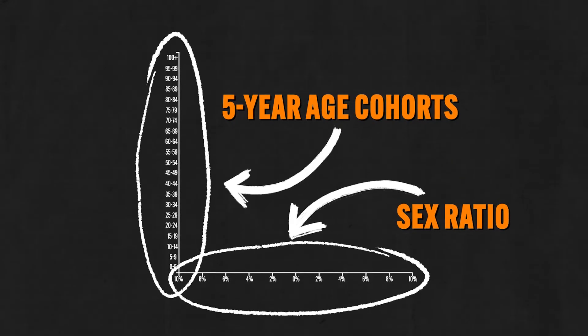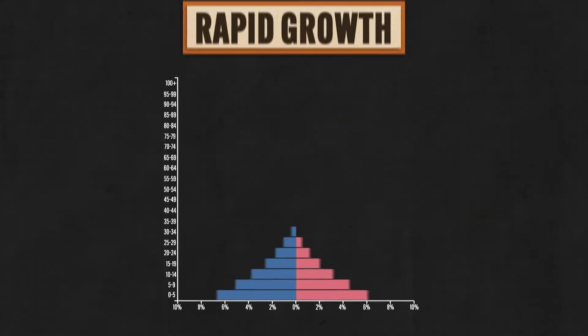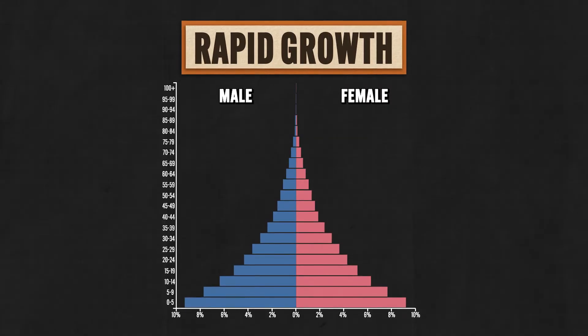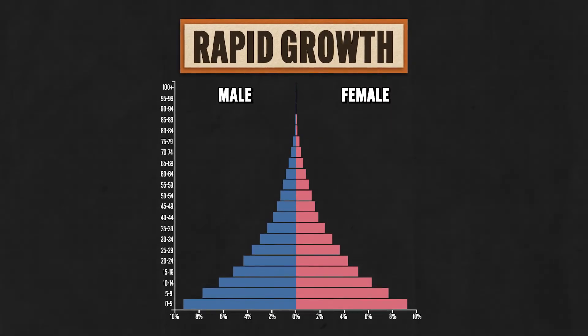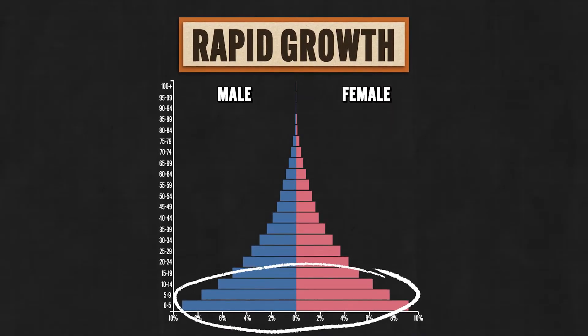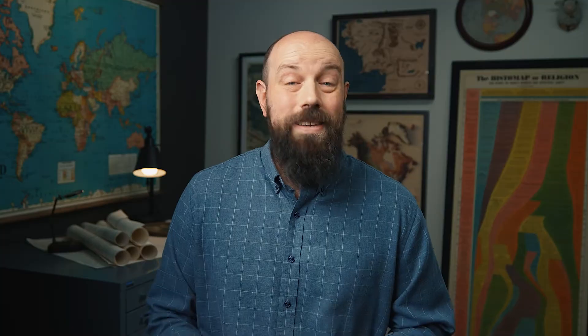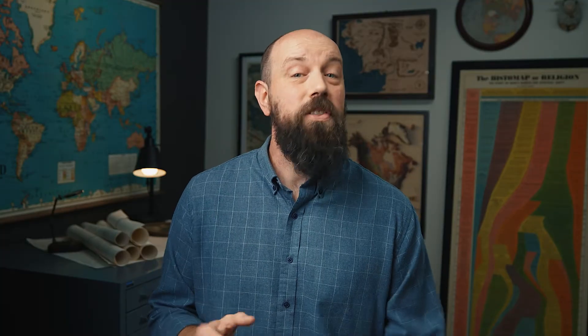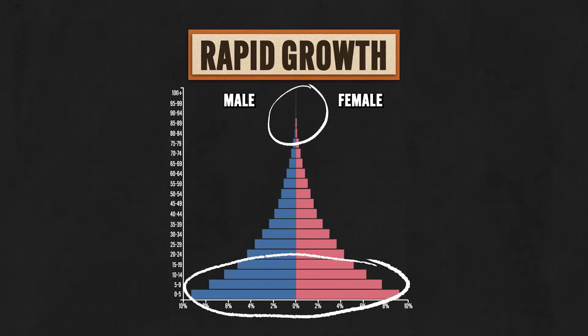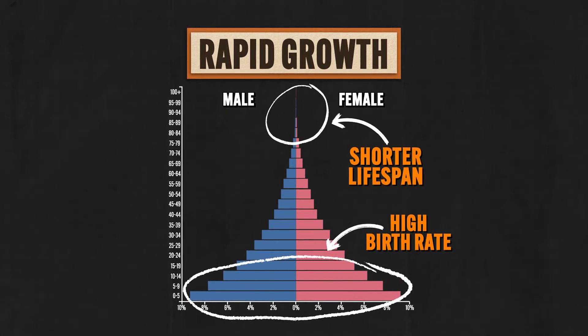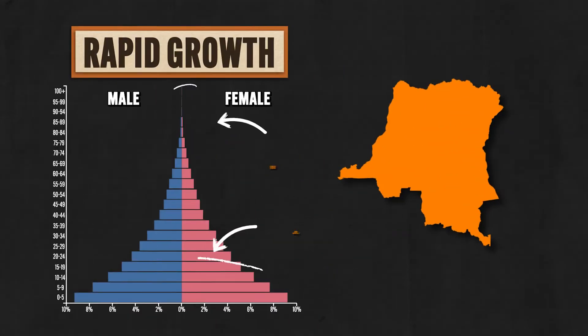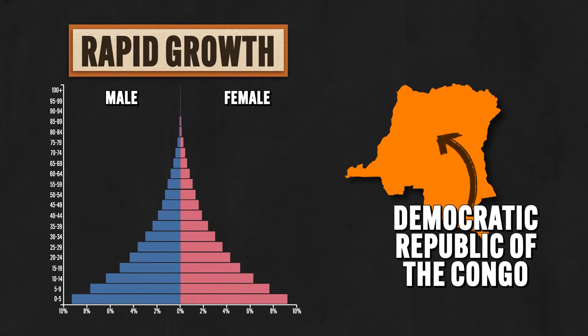And there are four typical shapes you've got to know. First is the rapid growth population, which looks like this. This pyramid is always going to be wide at the bottom and narrow at the top — there are huge numbers of young people but relatively few older people. This shape is often associated with developing countries, where the birth rate is high and lifespan is shorter. A good example is the Democratic Republic of the Congo, and what this means for them is that they'll face challenges like providing for the needs of all these children, like food and education.